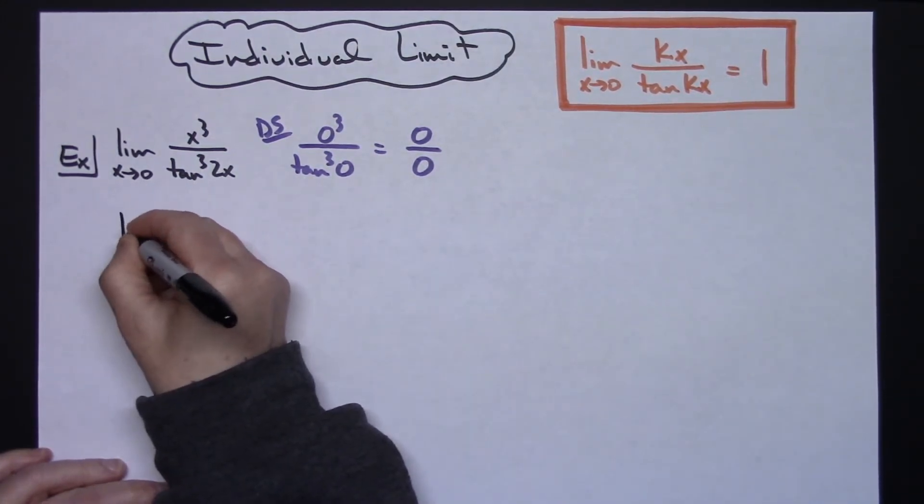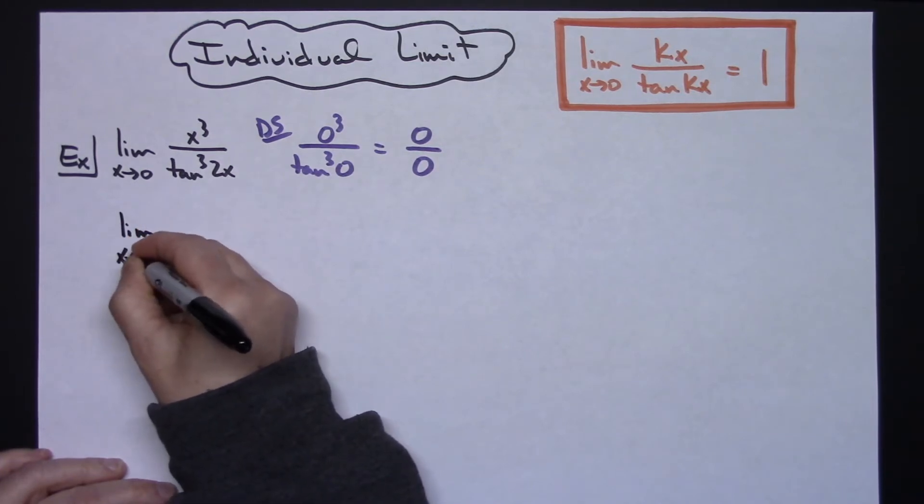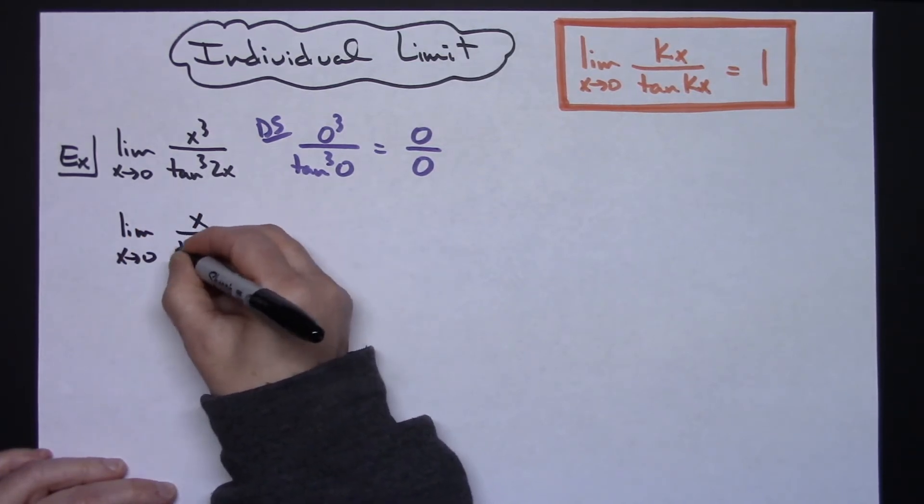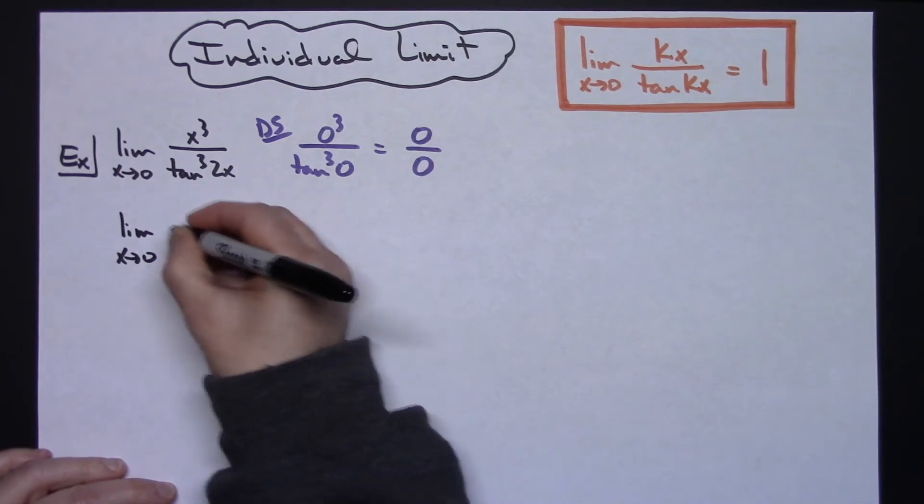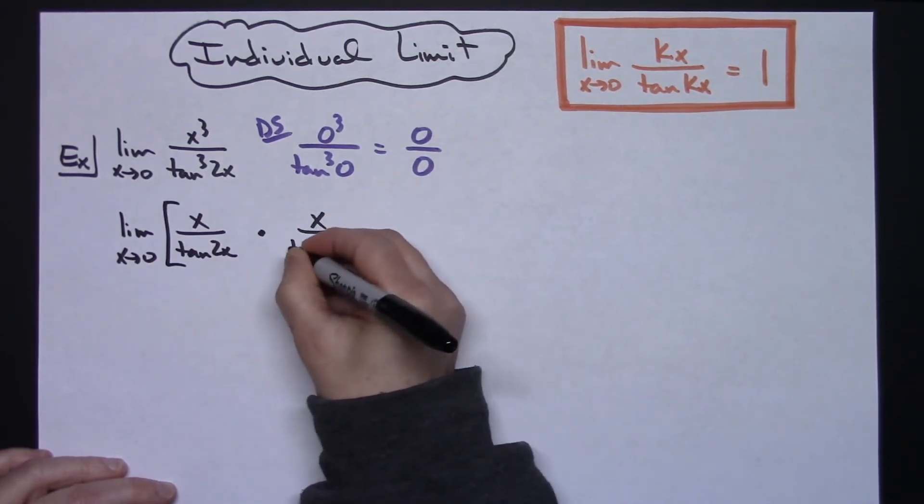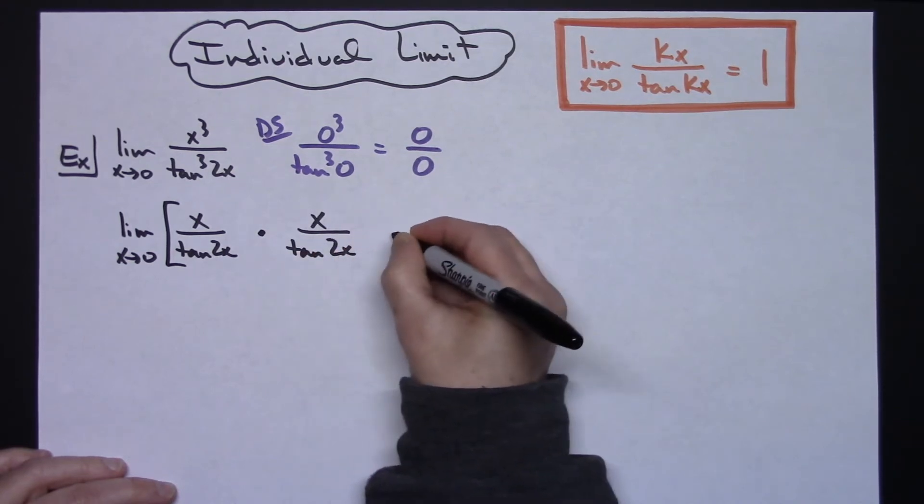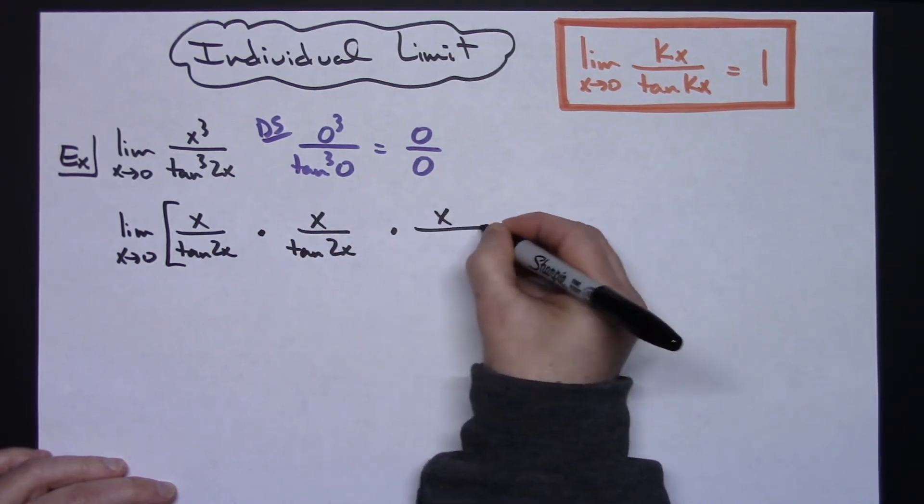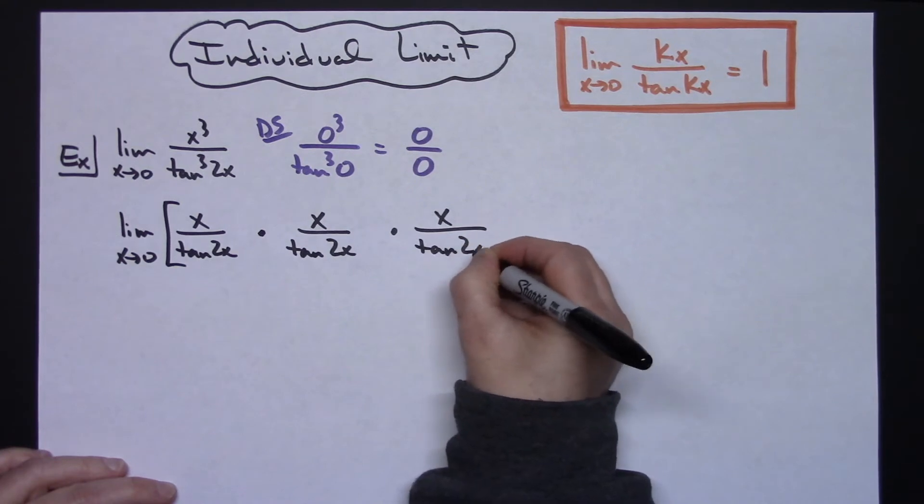So I'm going to do the limit as x approaches 0 of x over tangent of 2x times x over the tangent of 2x times x over tangent 2x.